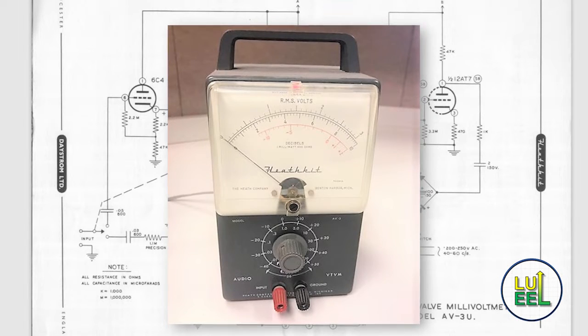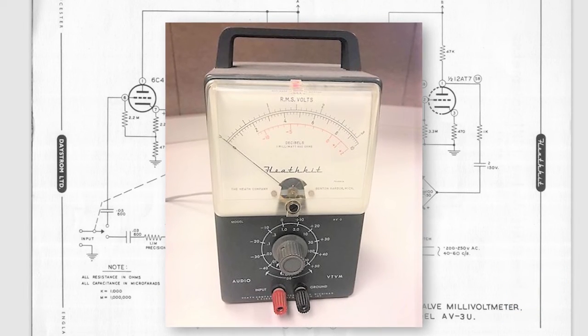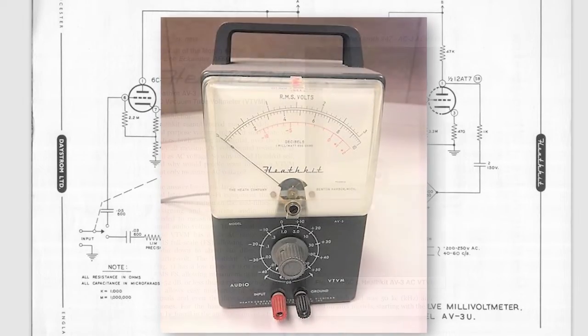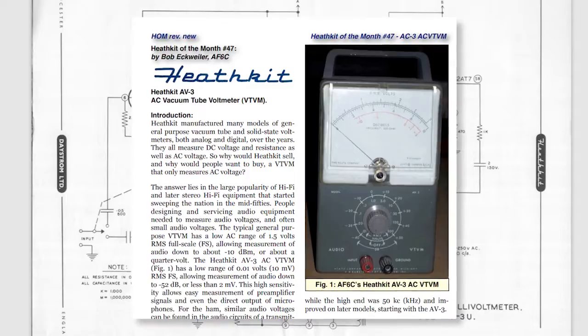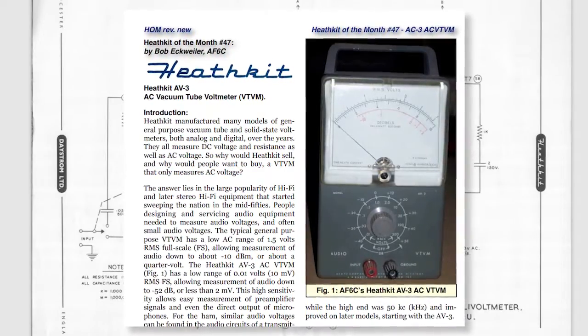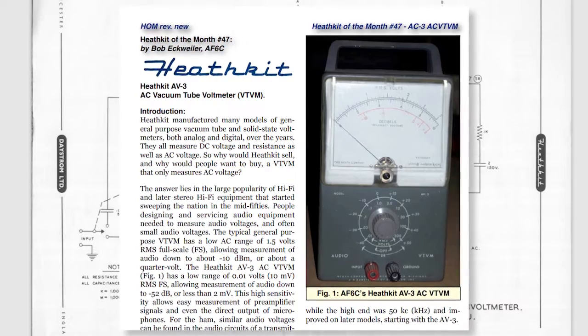So what is the Heathkit AV3? The short answer? It's an AC voltmeter with a large analog display. According to the Bob Eckweiler Heathkit of the Month article, they were manufactured in kit form for about five years, starting in 1956.